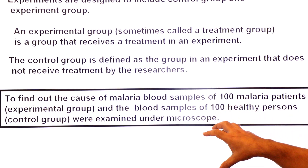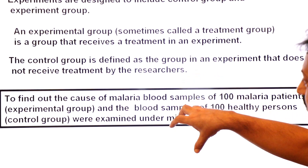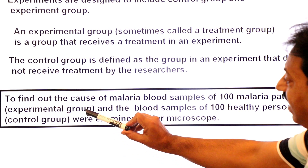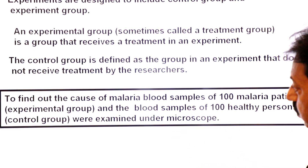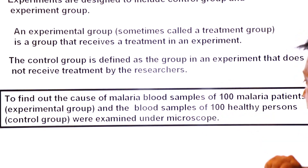To solve the malaria problem, based on the hypothesis 'Plasmodium is the cause of malaria,' an experiment was conducted. Blood samples from one hundred malarial patients — the experimental group, given treatment — and one hundred blood samples from healthy persons — the control group, not given treatment — were examined under a microscope to obtain results.